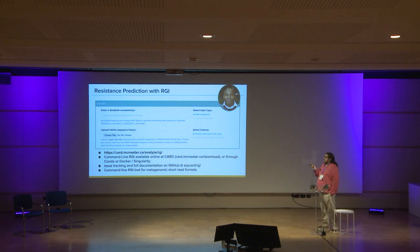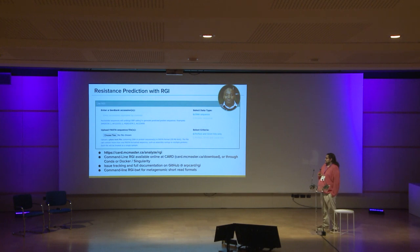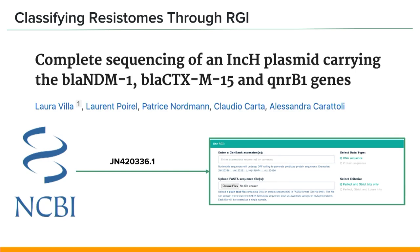Our software is the Resistance Gene Identifier, or RGI, which is the brainchild of our lead developer, Amos Rapheena. RGI is essentially a way for users to submit their own isolates, and RGI will tell them what resistance genes are present and annotate that using the information in the ontology and database. It's available online and through a command line distribution. I'll walk through an example using a plasmid sequenced in a paper from Laura Villa et al. in 2012 — it's a bit old but has multiple resistance genes in a single plasmid, making it useful for illustration.